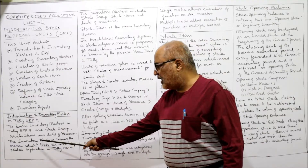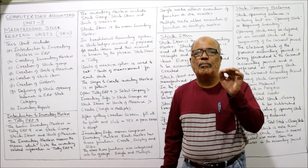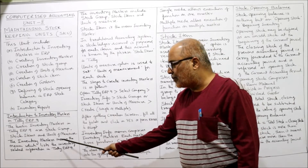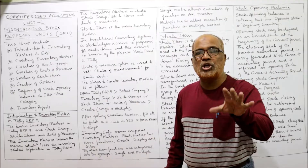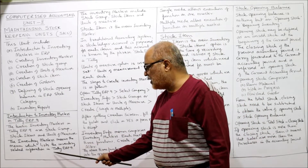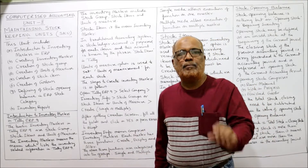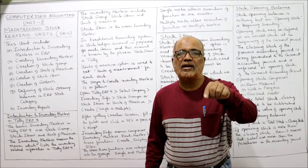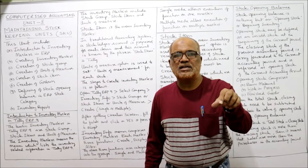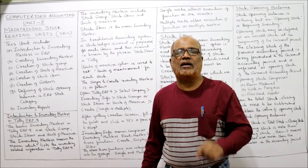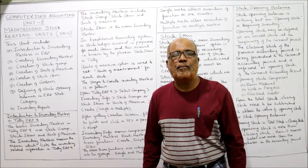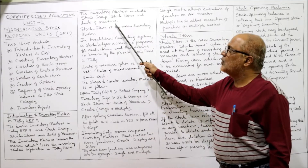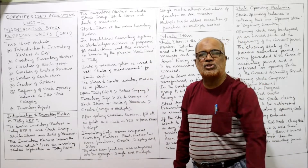Stock item is the main inventory master. In the traditional accounting system, a stock ledger account is prepared for each item of inventory. When we refer back to manual accounting, we open a separate ledger account for each item of inventory. The same ledger account we call a stock item in Tally ERP. So in manual accounting we call it a ledger, and in Tally ERP we call it a stock item.